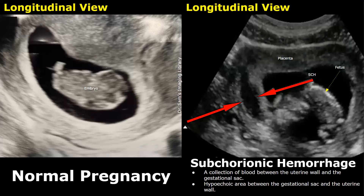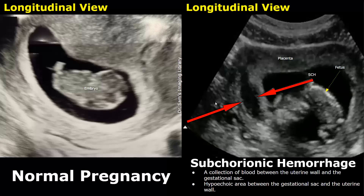Hello everyone, this is Dr. Sam and today we will look at subchorionic hemorrhage on ultrasound. Subchorionic hemorrhage refers to bleeding outside the gestational sac. Blood accumulates between the chorion and the uterine wall. We will compare the ultrasound appearance of a normal pregnancy with the appearance of subchorionic hemorrhage.